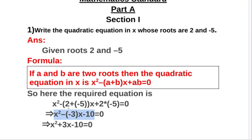So that is equal to x², 2 minus 5 that is equal to minus 3x, 2 into minus 5 that is equal to minus 10, equal to 0. That is equal to x² minus 3x plus... x² plus 3x minus 10 equal to 0.